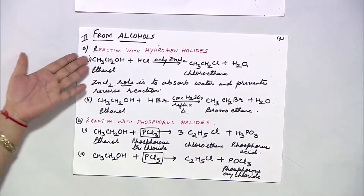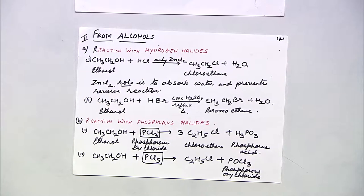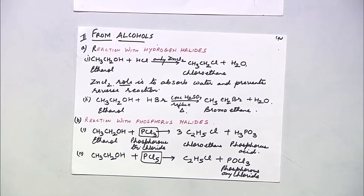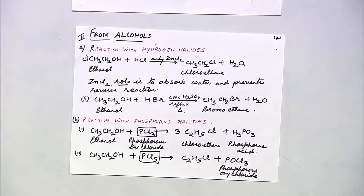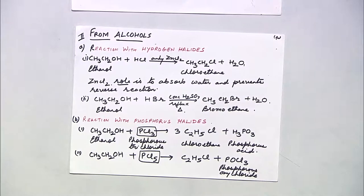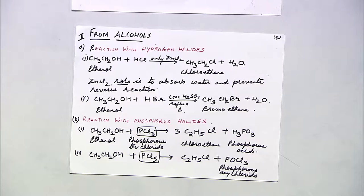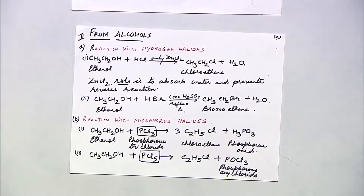Haloalkanes can also be prepared from alcohols. When ethanol reacts with HCl in the presence of anhydrous ZnCl2, the product is chloroethane and water. ZnCl2 absorbs water and prevents the reverse reaction. When ethanol reacts with HBr in the presence of concentrated H2SO4 under reflux and heat, you get bromoethane and water.